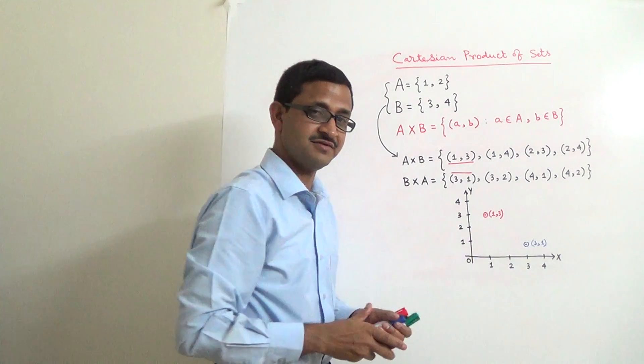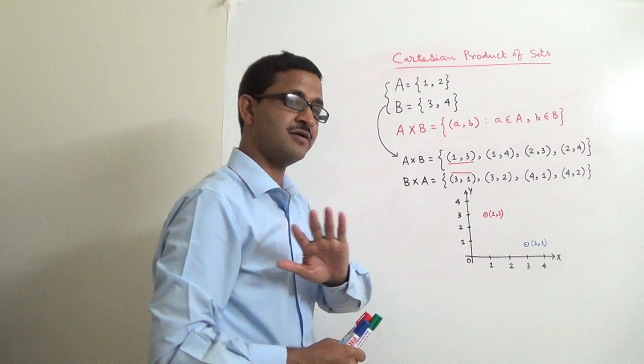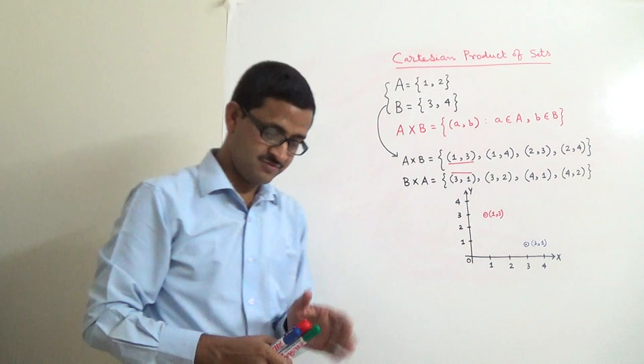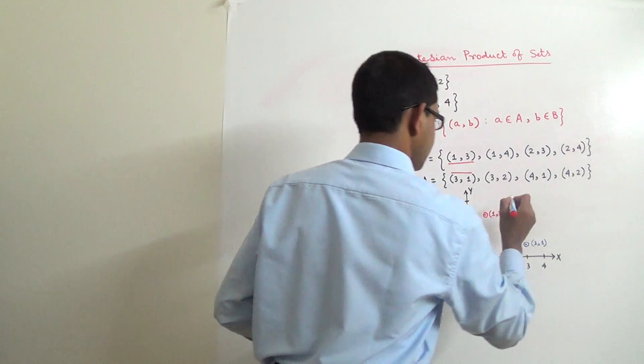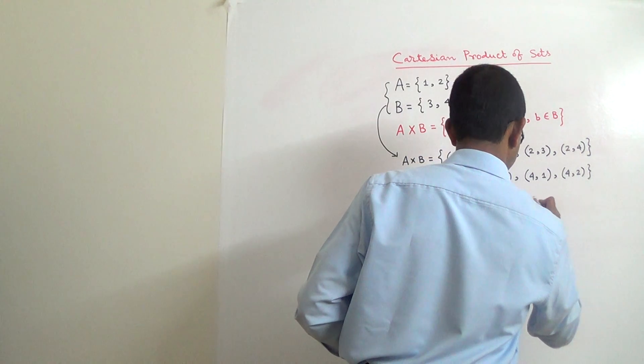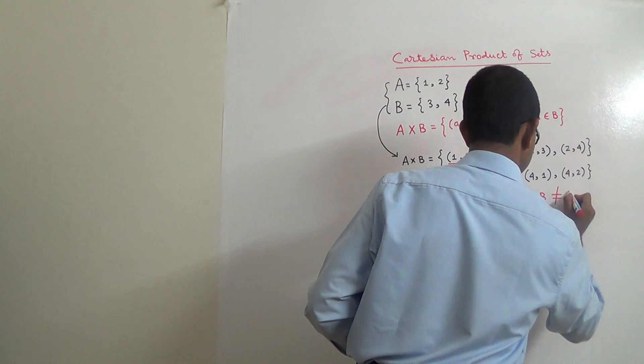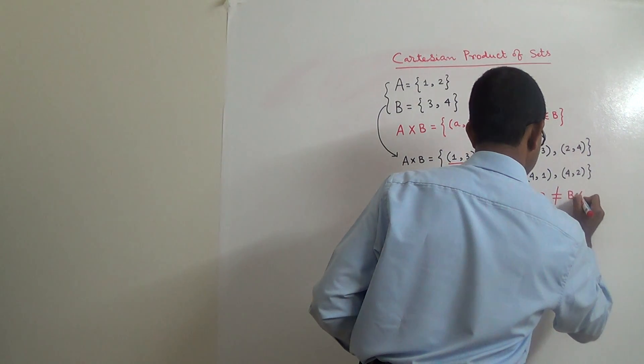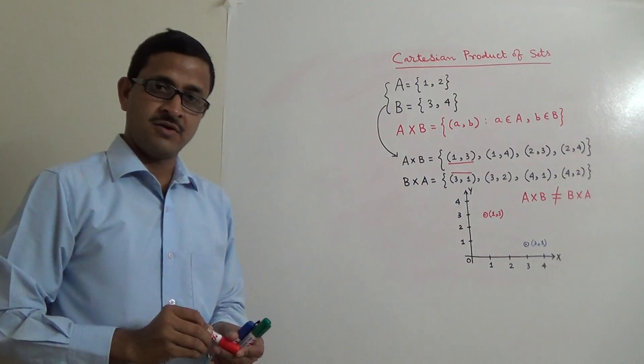And that is the reason that A cross B and B cross A are not equal. So, it is a very important observation that A cross B is not equal to B cross A.